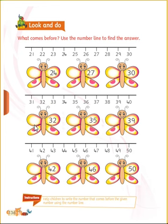Before which number will come? Thirty-two. Thirty-two se pehle number konsa hatha? Thirty-one. Correct — before 32, the number that comes is 31.